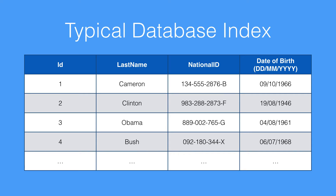Let's first talk through how a typical database index works. What we have here is a table from a standard relational database. We have a series of columns: the ID, the last name, national ID, and the date of birth. The ID column contains an auto-number — this would be our primary key in any other database. We have last names as text, a national ID which could be a social security number, national insurance number, or health number, and a date of birth in standard European format.